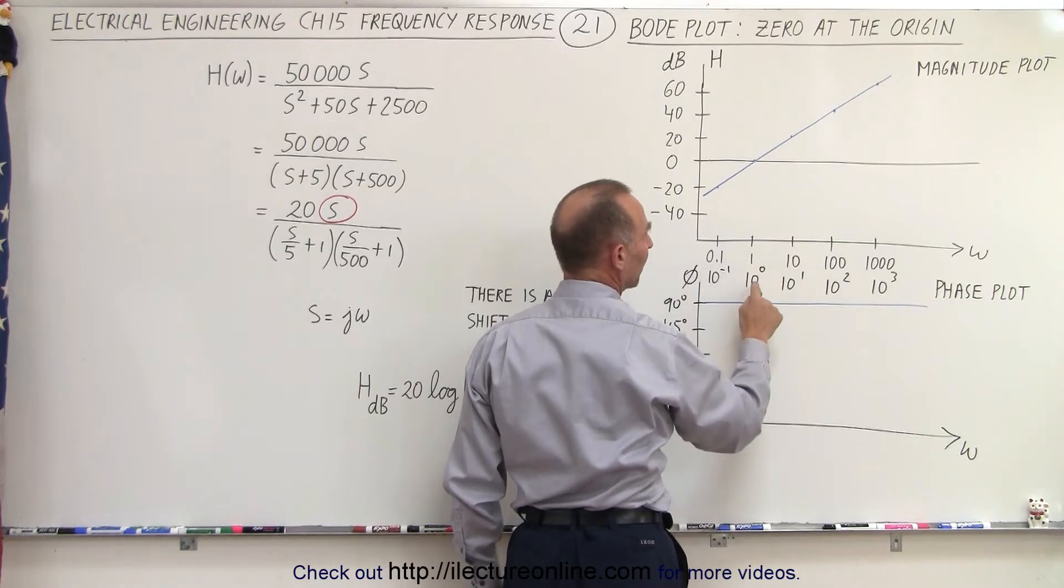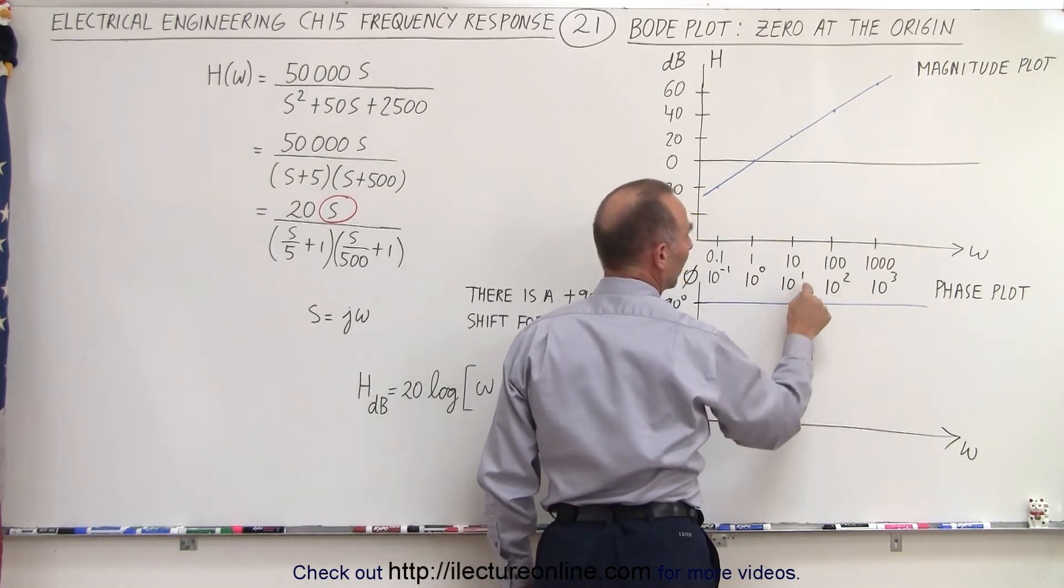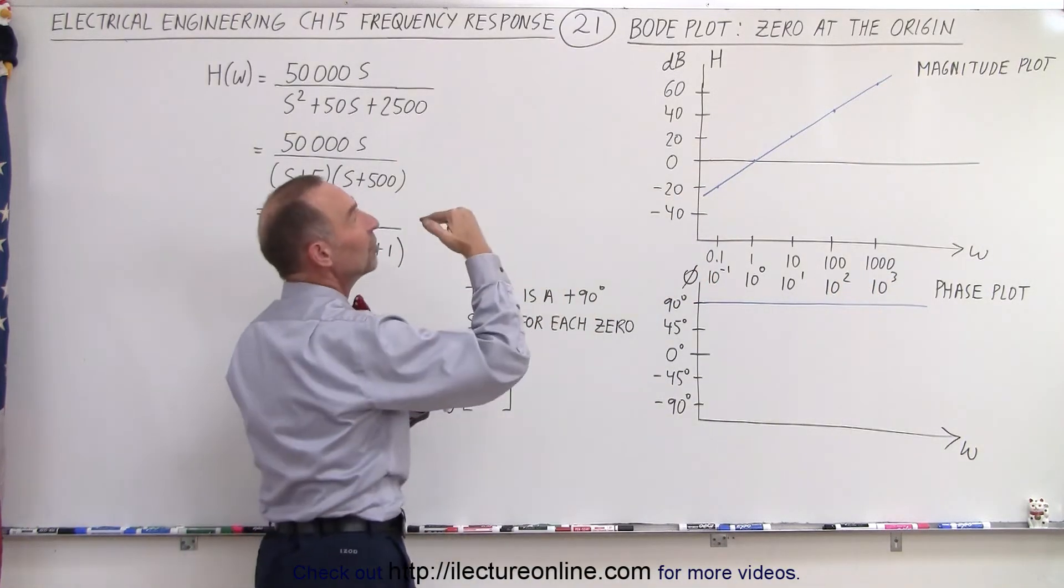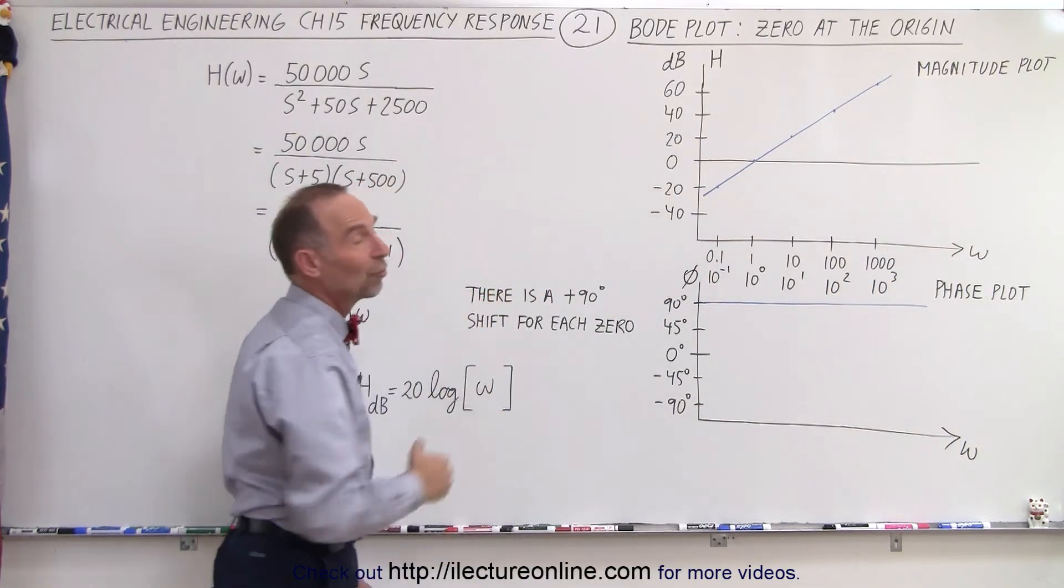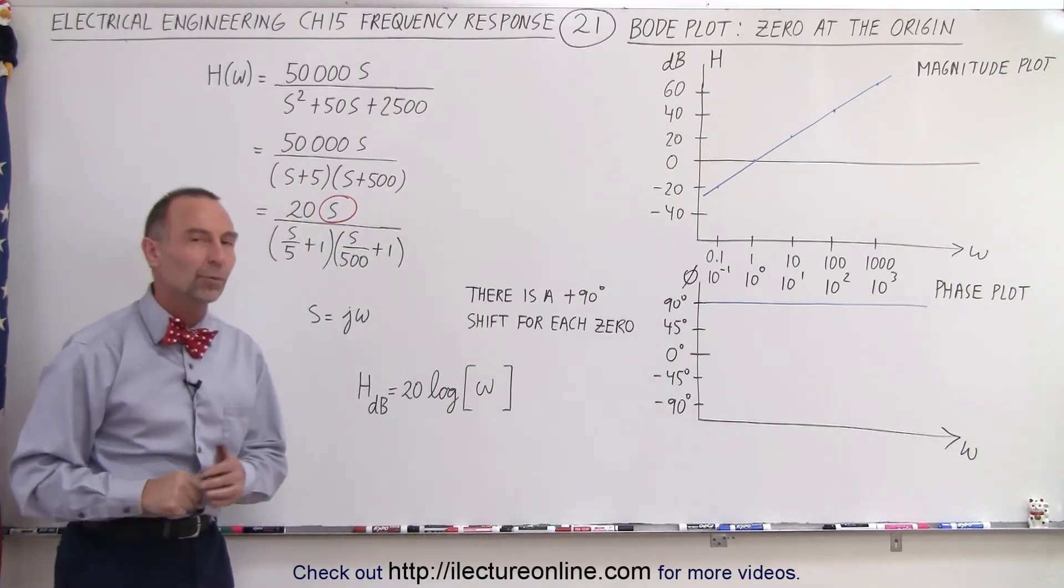Notice we can represent these numbers by 10 to the 0, 10 to the 1, 10 to the 2, 10 to the 3. So it's basically 1, 2, 3 times 20 which gives you the magnitude of the transfer function as a result of the zero that we find here in the numerator.